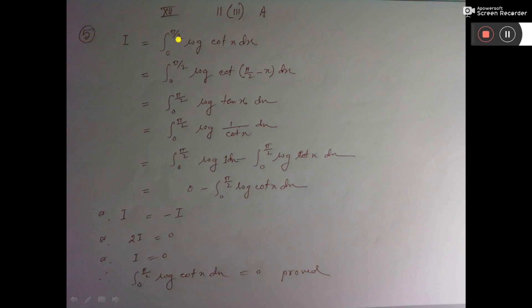In place of x, we will put pi by 2 minus x. Now you know cot(90 minus theta) is tan theta. In class 10, you have learned this.